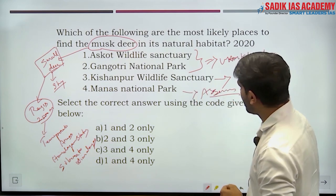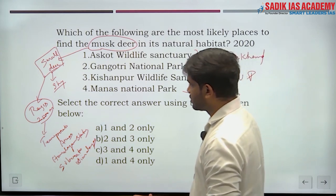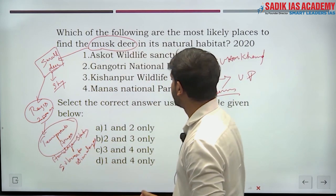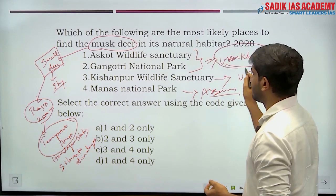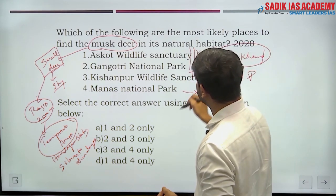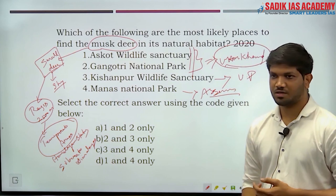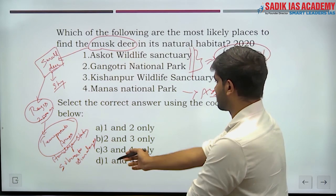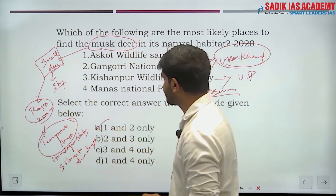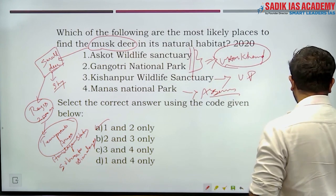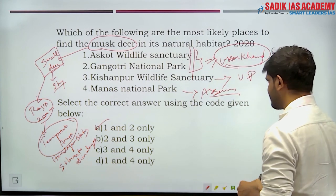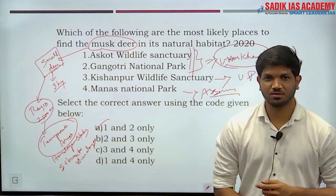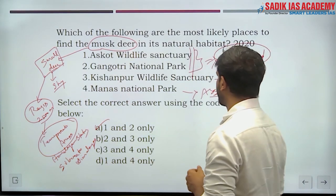Musk Deer reside in temperate areas. Uttarakhand is a temperate area where Musk Deer reside. Therefore Ascot Wildlife Sanctuary and Gangotri National Park — both in Uttarakhand — are the answer.